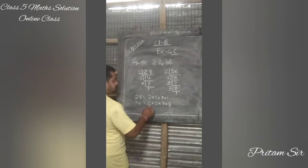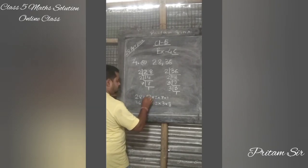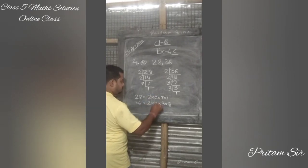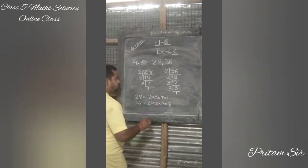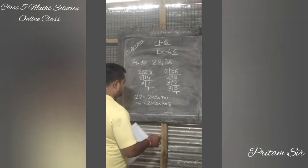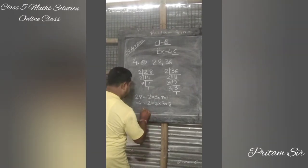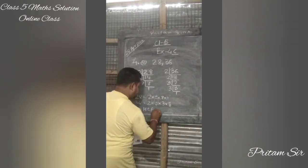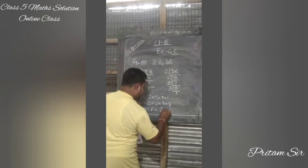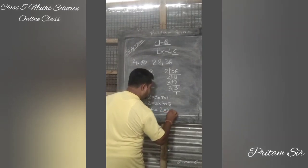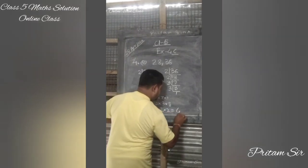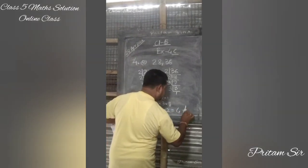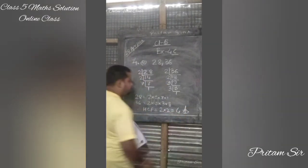Now see what factors are common between 28 and 36. The 2 and 2 are common. So the HCF is equal to 2 × 2 = 4. The answer is 4.